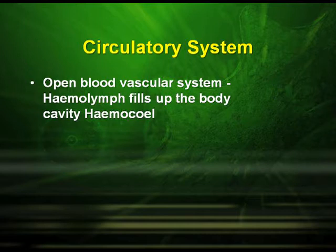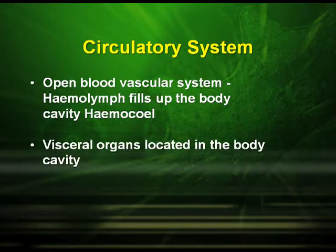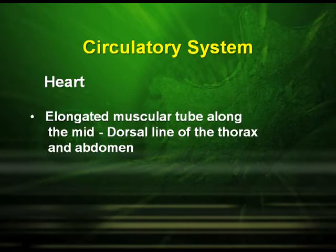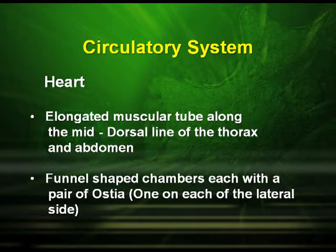Cockroaches have an open blood vascular system. The haemolymph fills up the body cavity called the haemocoel. The visceral organs are located in the body cavity, and the haemolymph is made up of colourless plasma and haemocytes. The heart is an elongated muscular tube running along the mid-dorsal line of the thorax and abdomen, with funnel-shaped chambers each having a pair of ostia, one on each lateral side.